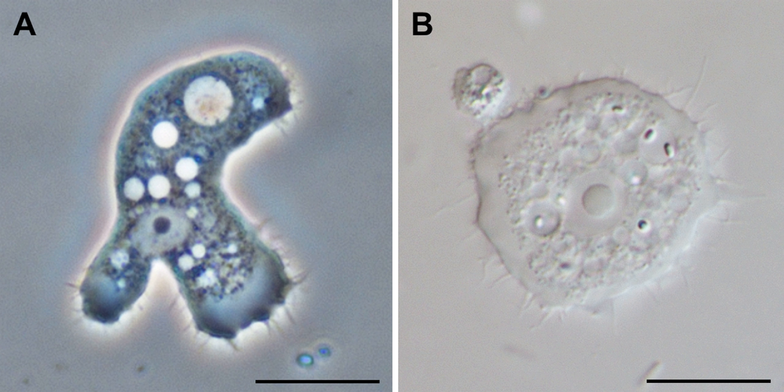Discosia is a class of Amoebozoa, consisting of naked amoebae with a flattened, discoid body shape. Members of the group do not produce tubular or subcylindrical pseudopodia, like amoebae of the class Tubulinia.